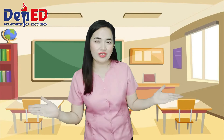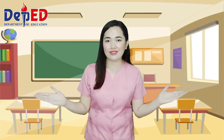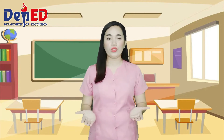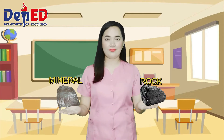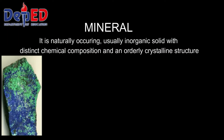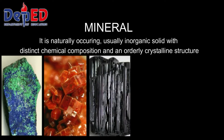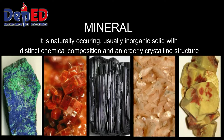Have you ever wondered how minerals differ from rocks? How will you know if you are holding a mineral or a rock? A mineral is defined as naturally occurring, usually inorganic solid, with distinct chemical composition and an orderly crystalline structure.